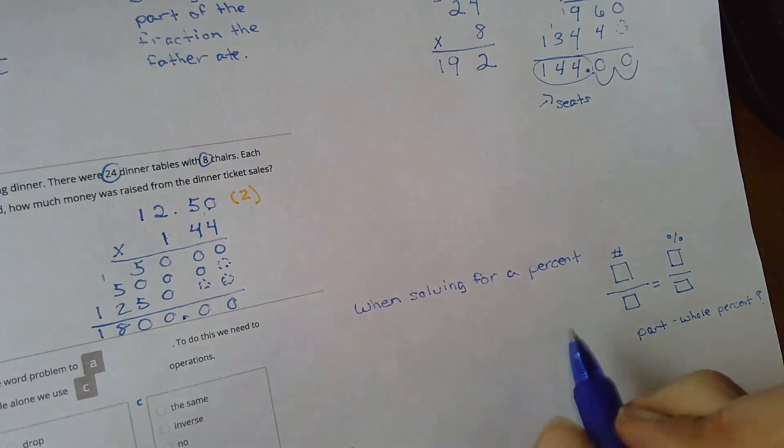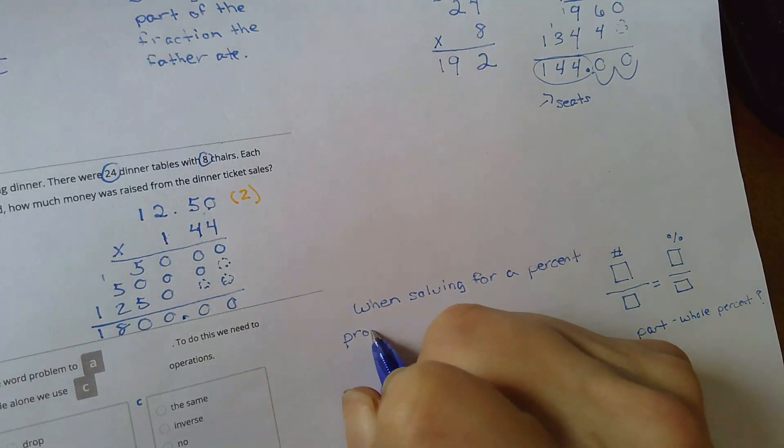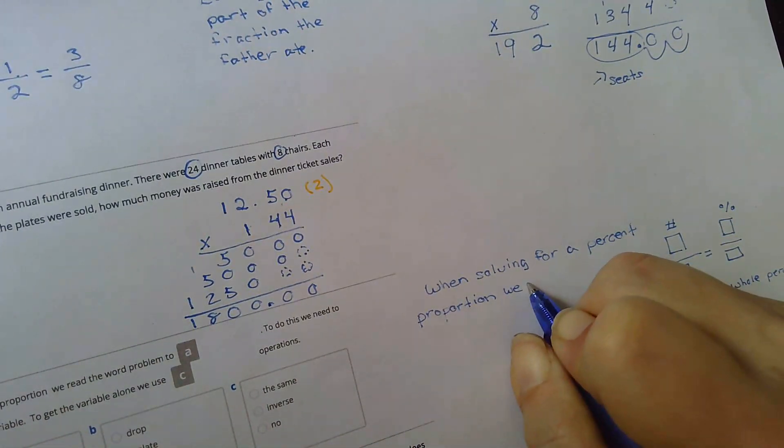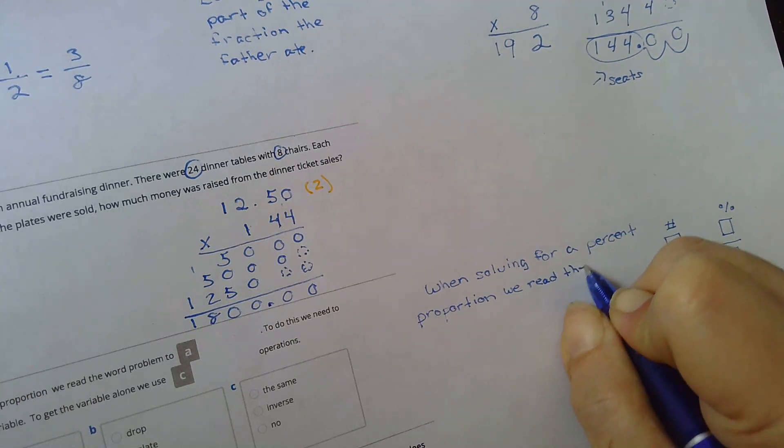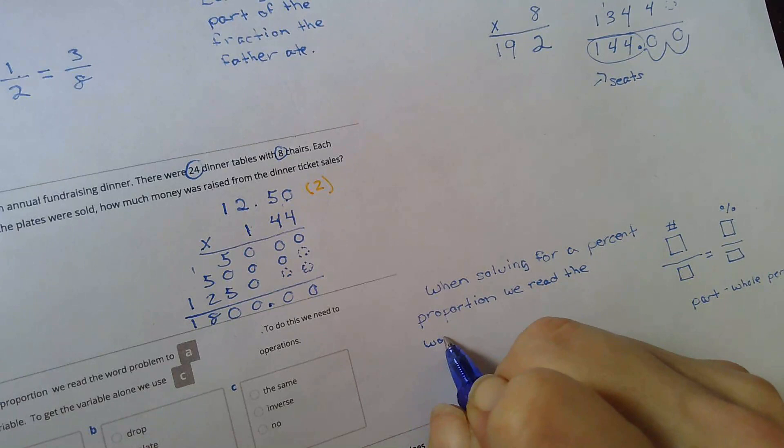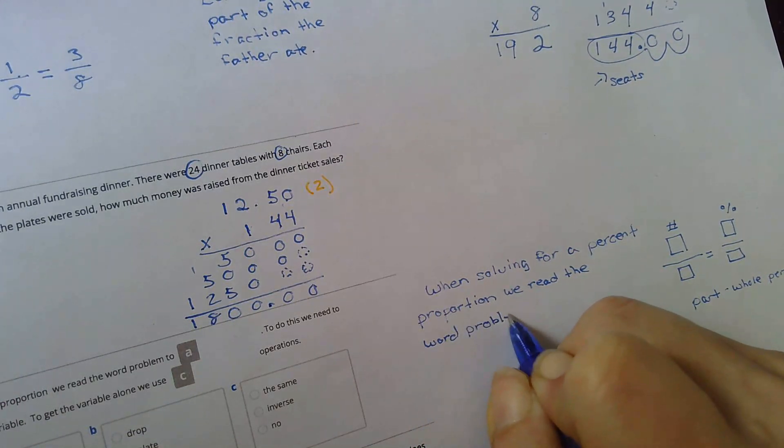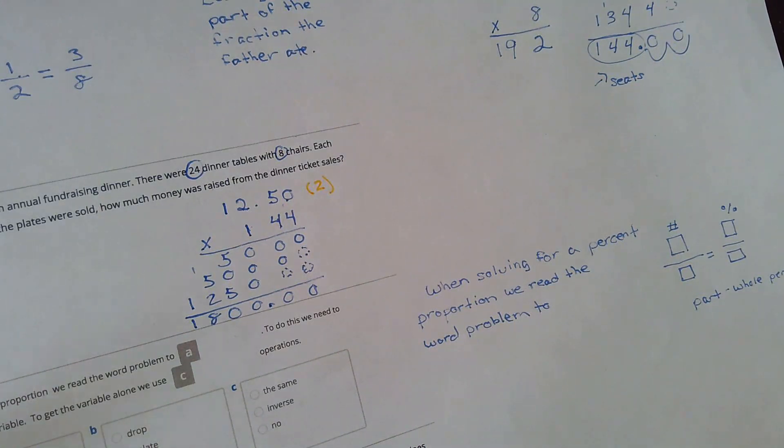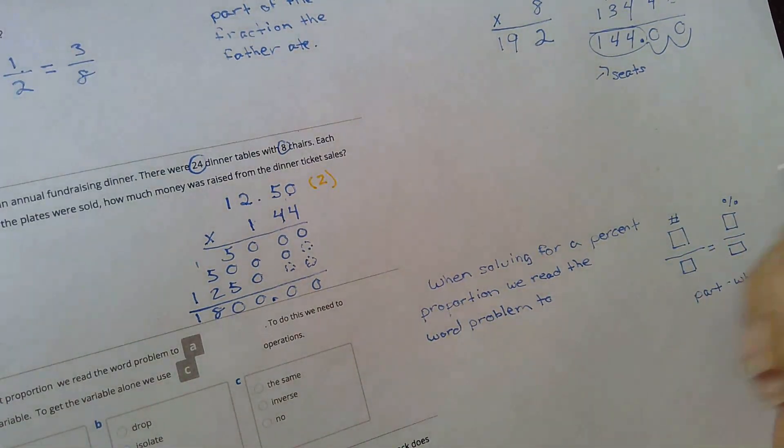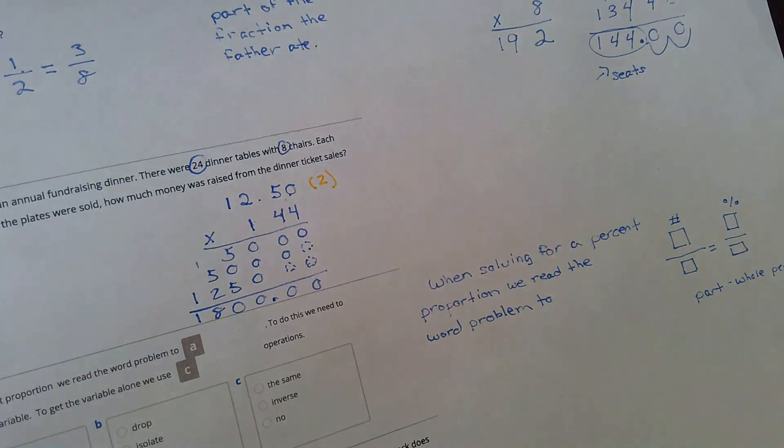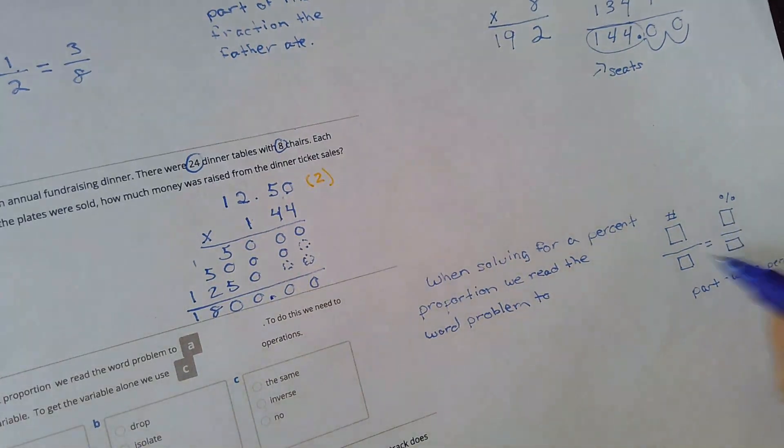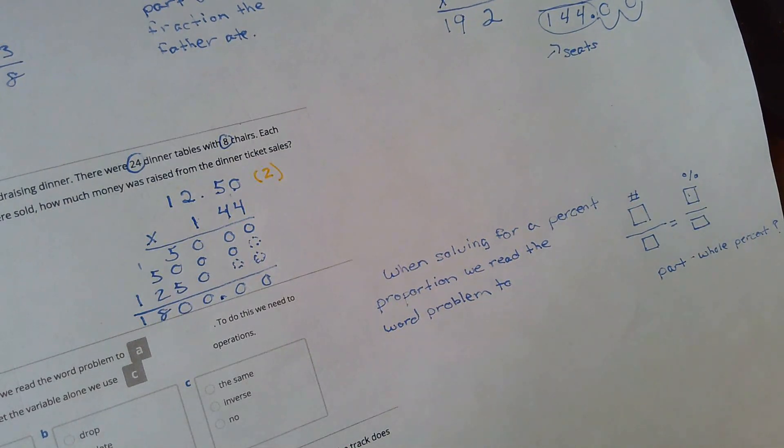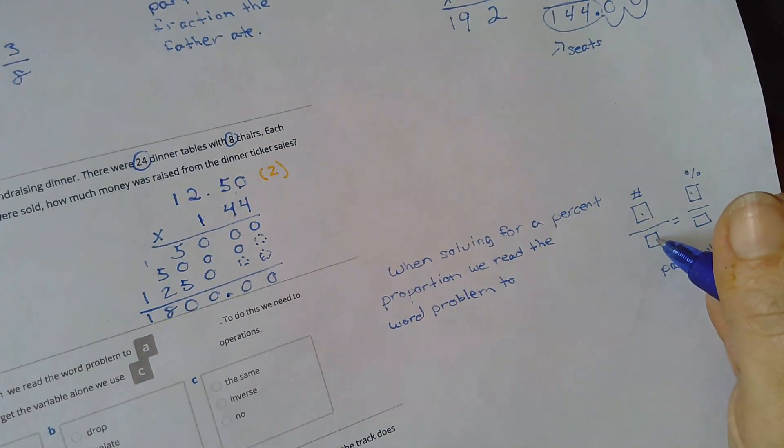When solving for a percent proportion, we read the word problem to find the value of the variable. I could use any letter, okay? So that one doesn't matter. I need to know if I'm solving for percent, my variable will go here. If I'm solving for the part, my variable will go there. If I'm solving for the whole, my variable will go there, right?